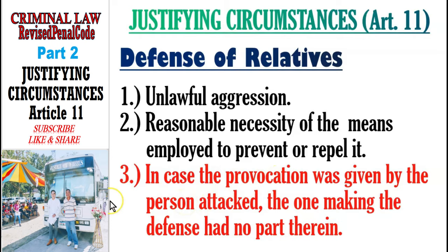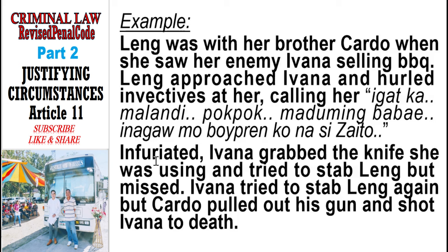Example: Leng was with her brother Cardo when she saw her enemy Ivana selling barbecue. Leng approached Ivana and hurled invectives at her. Infuriated, Ivana grabbed the knife and tried to stab Leng but missed. Ivana tried again but Cardo pulled out his gun and shot Ivana to death. Here, there was provocation on the part of the relative being defended — Leng provoked Ivana — but there is still a justifying circumstance of defense of relative because the person defending, Cardo, did not take part in the provocation.